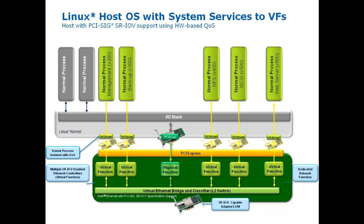What does this buy you? Well, it buys you an immediate quality of service because each one of these virtual functions is serviced with our internal round-robin scheduler — this is in hardware. This means that your backup process, for example, can't use all the pipe, can't use all the bandwidth and starve all the other processes. I'm going to do a demonstration of this right now to give you a better idea of how this works.